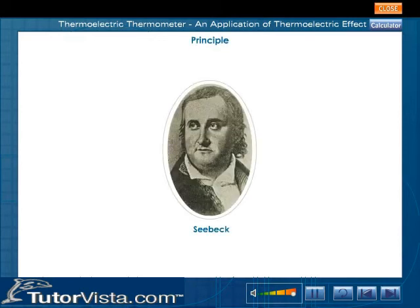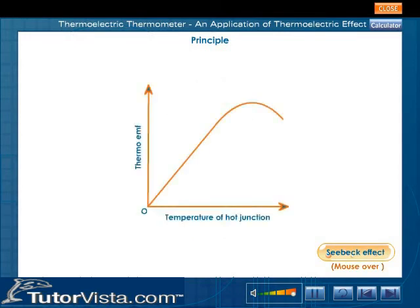Principle: It is based on Seebeck effect. A graph between the temperature of the hot junction and the thermo EMF is used to determine the unknown temperature. The graph is a straight line for a considerable range of temperature, provided the temperature of the cold junction is constant.